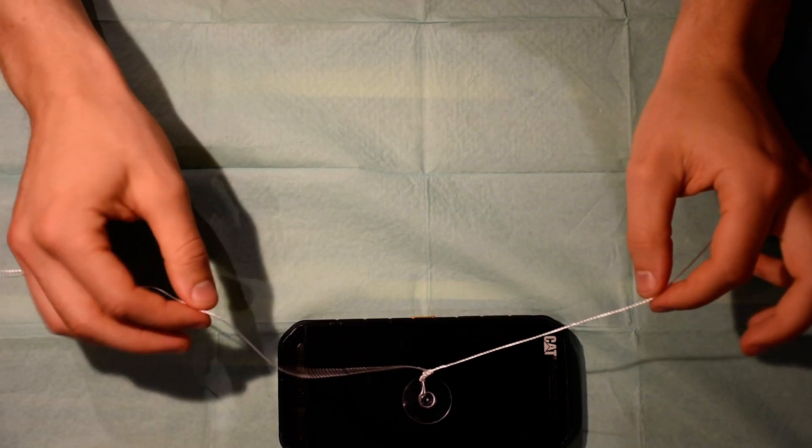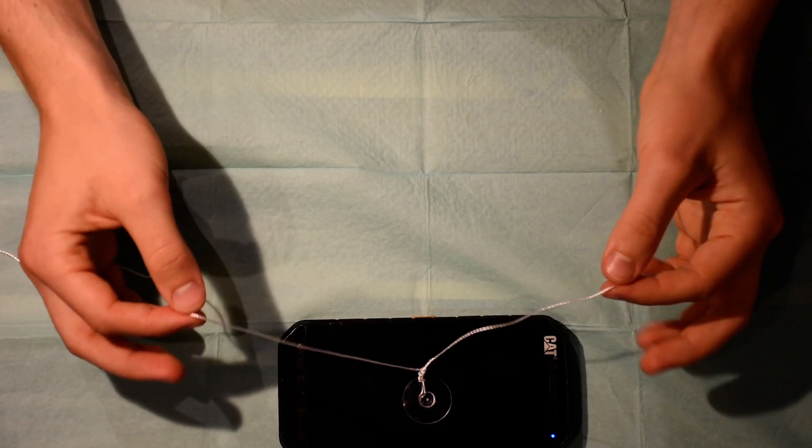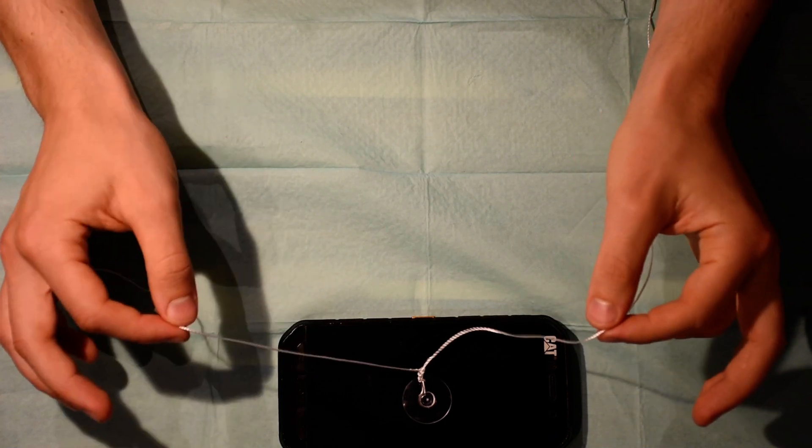For the karate knot you take the two ends of the cord into the index finger and thumb of each hand.